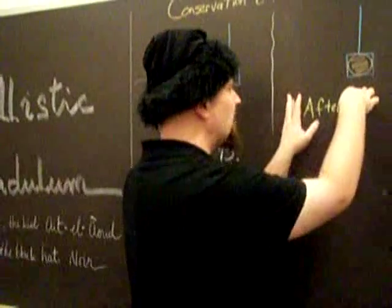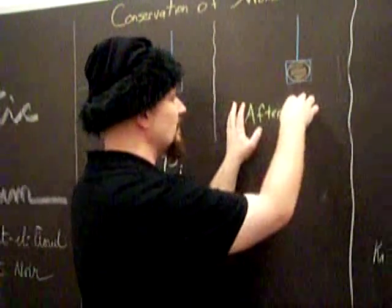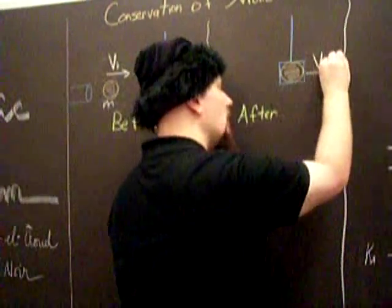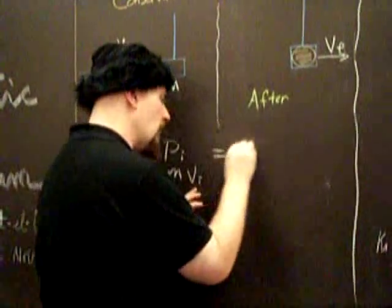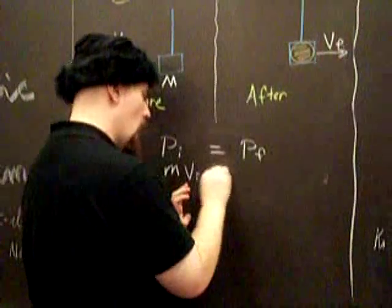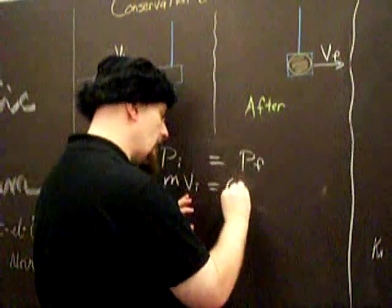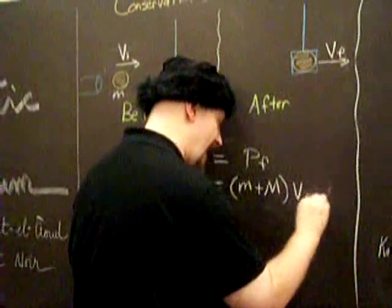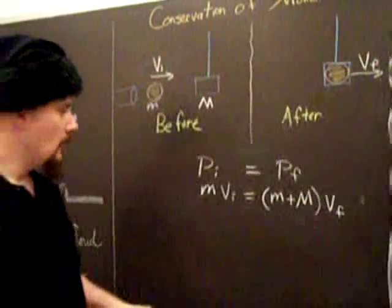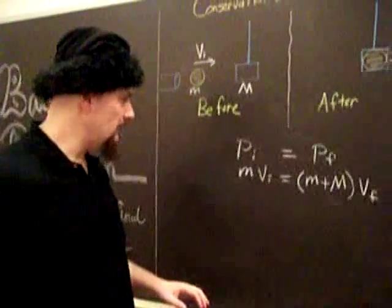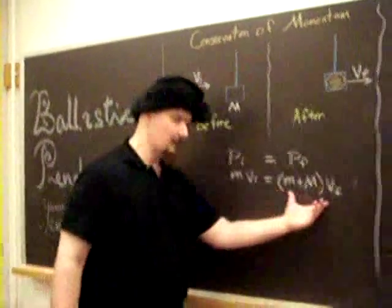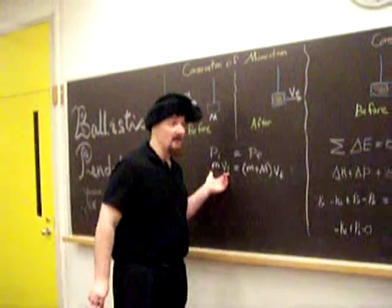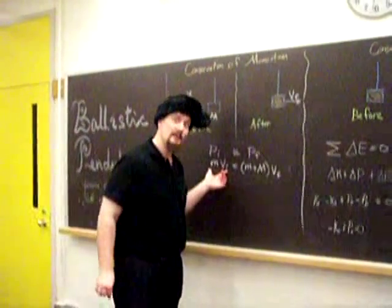And then afterwards, after the inelastic collision, it goes with some velocity v_f. So, the final momentum will be the sum of the two masses times v_f. We'll find all of these values. We'll get a number here and a number here. And those numbers should be very close because momentum is conserved.